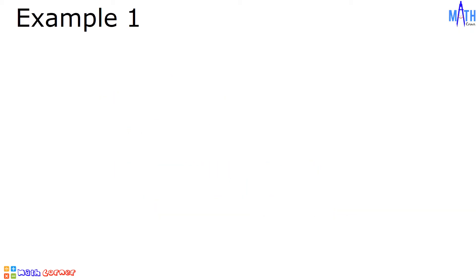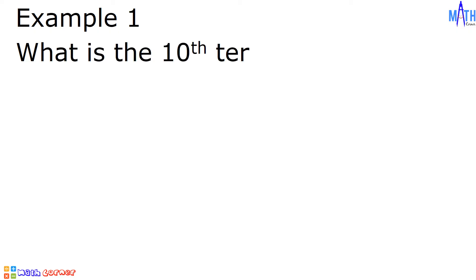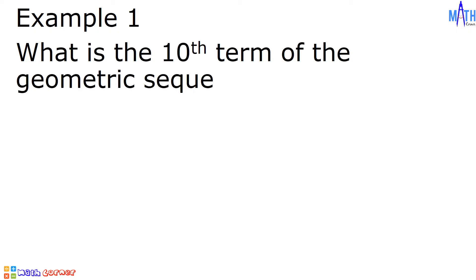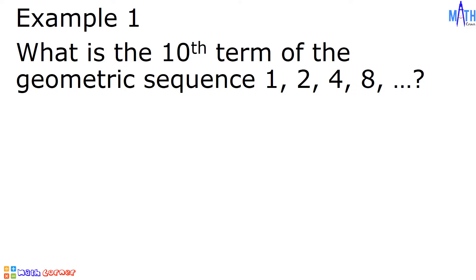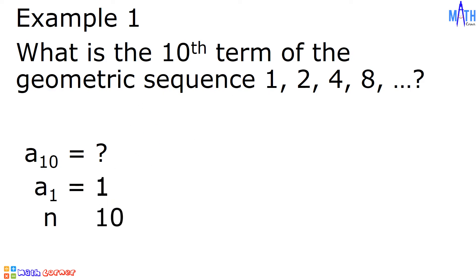Example number 1: What is the 10th term of the geometric sequence 1, 2, 4, 8, and so on? Let us use the formula to find the 10th term. First, let us determine all the given values. a sub 10 is the missing term, 1 is the first term, n is equal to 10, and the common ratio is equal to 2.